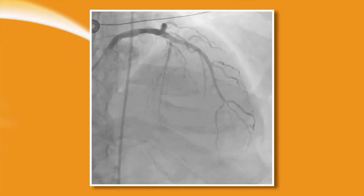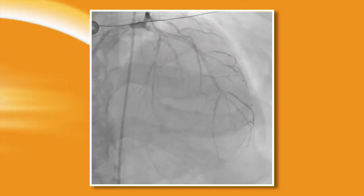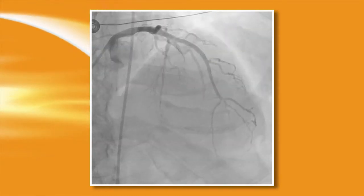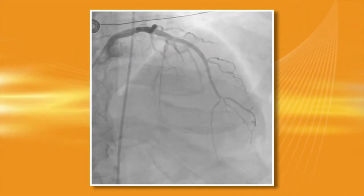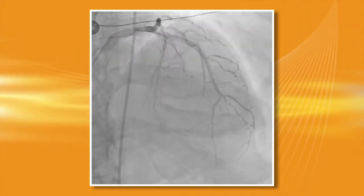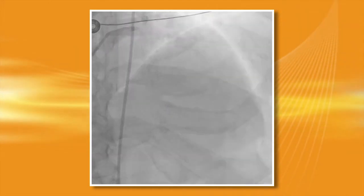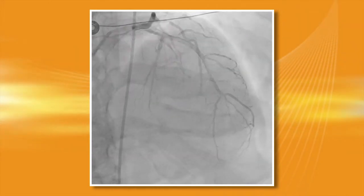We gave large doses of nicardipine, which is our preferred vasodilator, as well as adenosine, in order to restore antegrade flow. It took about 10 to 15 minutes of aspiration, followed by local delivery of adenosine and nicardipine, before the patient restored his flow and the ST elevation resolved.